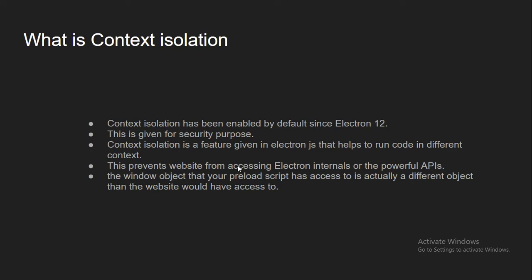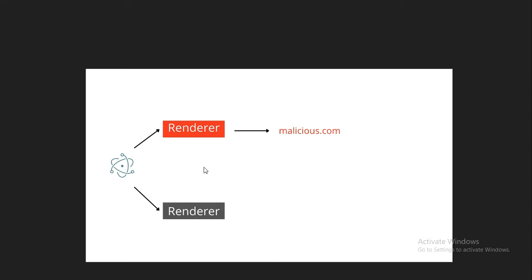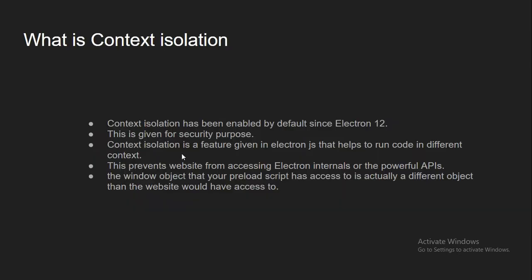Context isolation also prevents a website from accessing Electron internal APIs. To understand this, let's take an example. Assume we have an Electron application with one main process and two different renderer processes. One of these processes is accessing a malicious website. If our internal API is exposed to the external world, that malicious website can also access our Electron APIs, and can write a malicious script to completely take over our Electron application. To avoid that, Electron introduced context isolation.